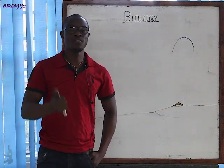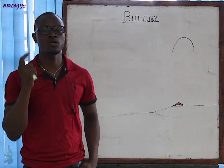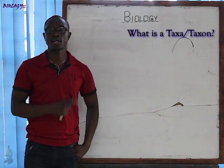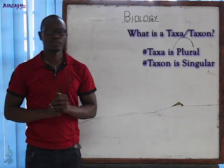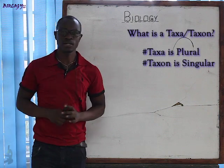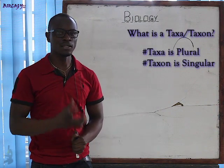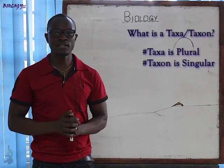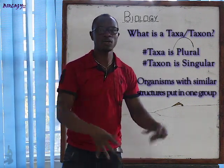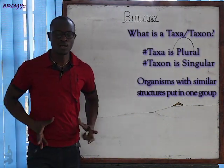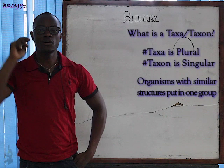Now let's continue with more definitions. We defined magnifying lens and hand lens. Now let's define taxa. Taxa is the plural form — when there are many. When there is only one, it is called a taxon. A taxon is a group of organisms that have similar characteristics and are placed in one group. All these organisms that show the same behavior are placed in one group — that group is called a taxon.